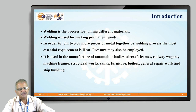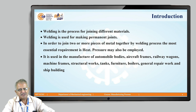Welding is a process used for joining different materials and elements. It is used for making a permanent joint. In order to join two or more pieces of metals together, welding is used, where the essential requirement is heat. Pressure can be used in some cases, and if pressure is not used, then filler material is used to complete the welding. It is used everywhere now, even in repair and maintenance work, regularly as a fabrication process.